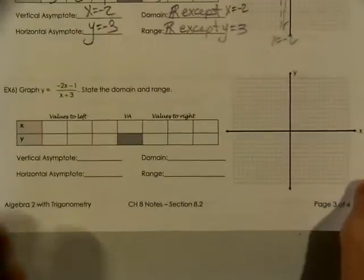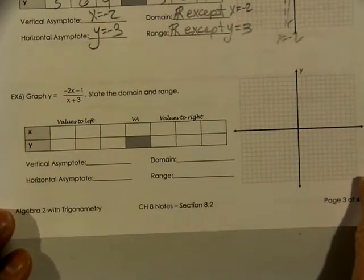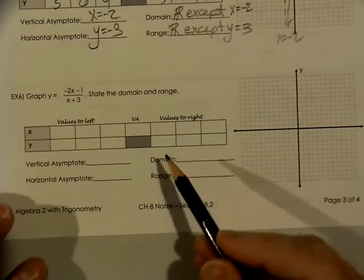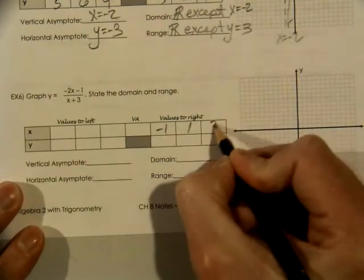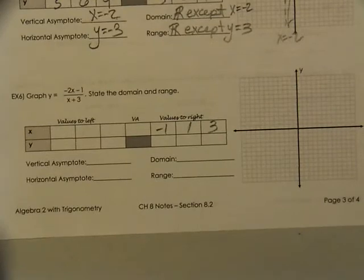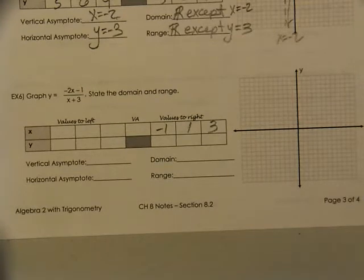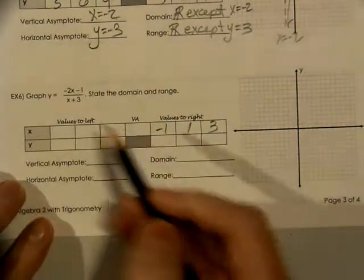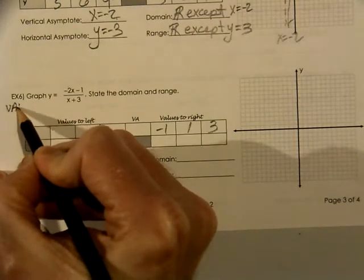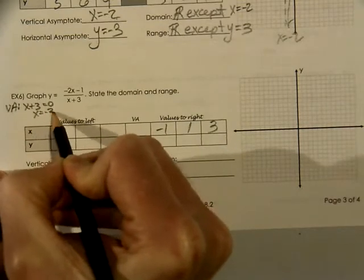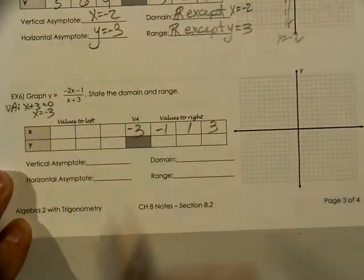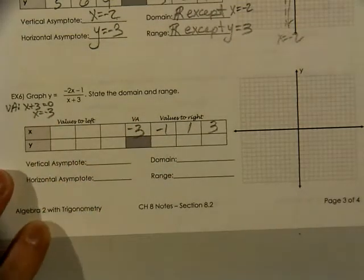So go ahead, pause the video, give this a try. I'll let you know I'm going to use x equals negative one, one, and three. You can pick any numbers, but if you want yours to match mine, use those. Now we're going to look at the vertical asymptote — that's x plus three equals zero, which gives us a vertical asymptote at x equals negative three.